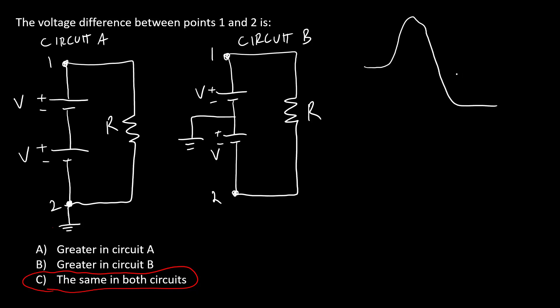In the earlier video explaining the ground symbol, we had this sea level analogy where if I have a mountain, the top is at an elevation of 10,000 feet and the bottom of the ocean is at negative 2,000 feet.